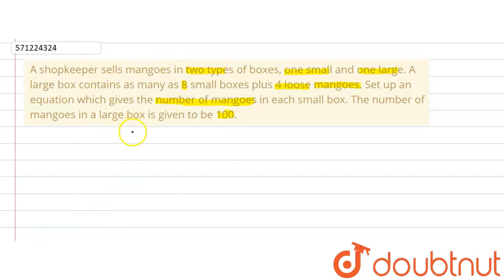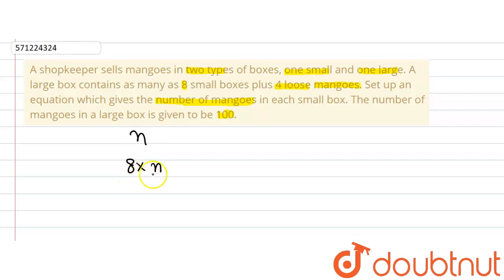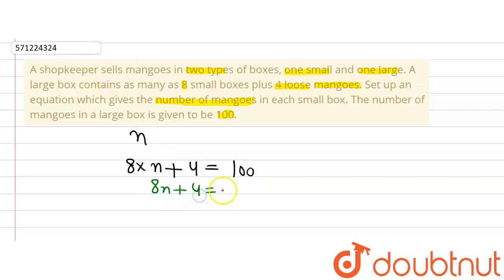Let us assume that the number of mangoes in the small box is n. Then, according to the question, the number of mangoes in the large box equals 8 times the mangoes in one small box plus 4 loose mangoes. Since the large box contains 100 mangoes, we get the equation: 8n + 4 = 100.